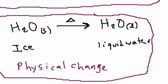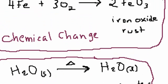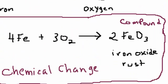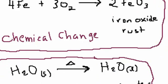In the above example with iron and oxygen, we don't have iron anymore and we don't have oxygen anymore — we have a combination of both. This is a completely new thing, and this is a chemical change when the structure is changing.